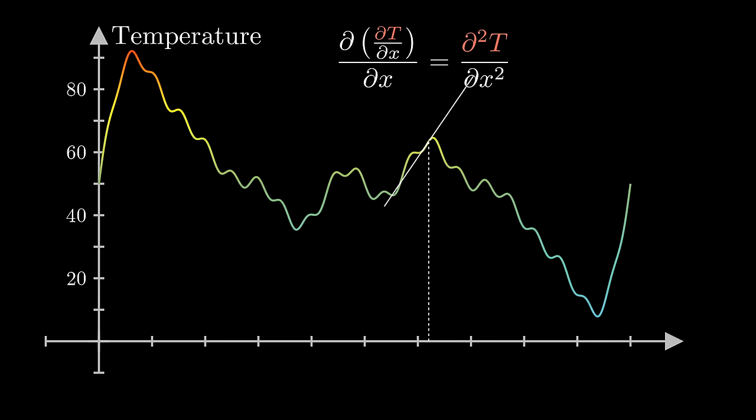Similarly, that slope decreases at points where the graph curves downwards, where the rate of change of this rate of change is negative.